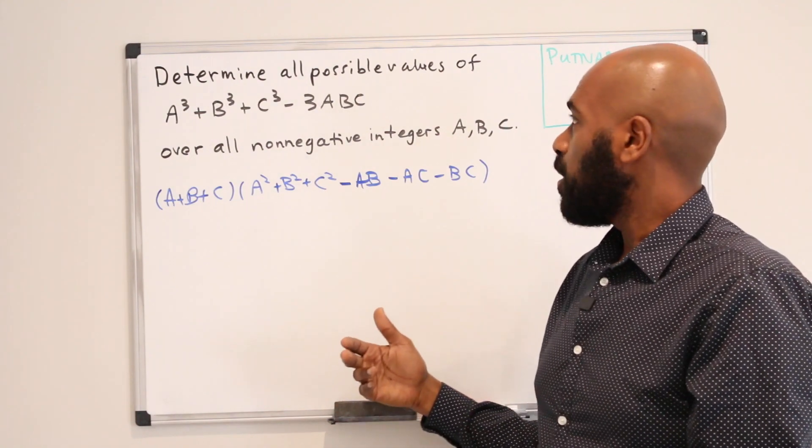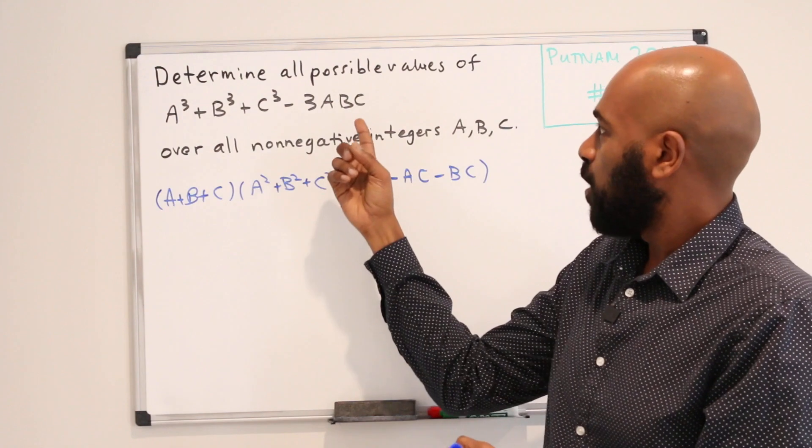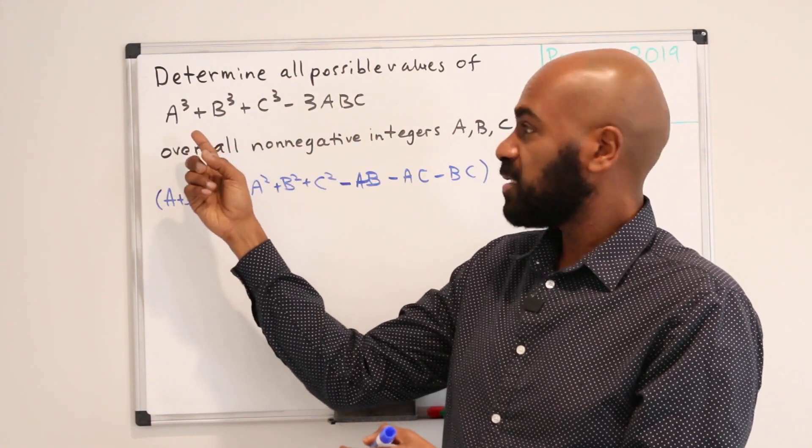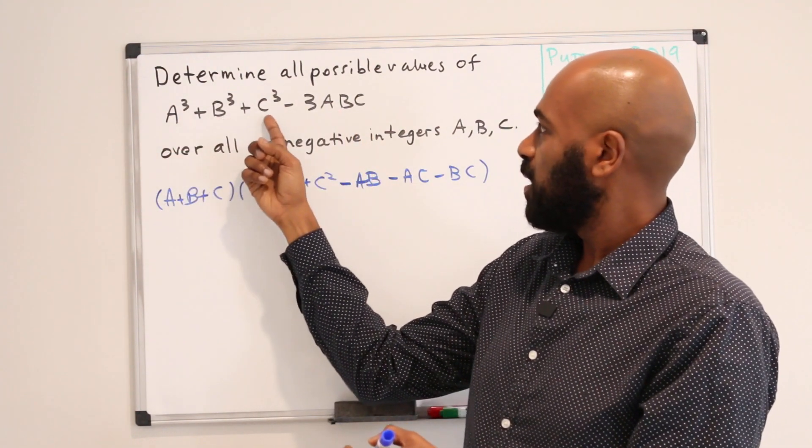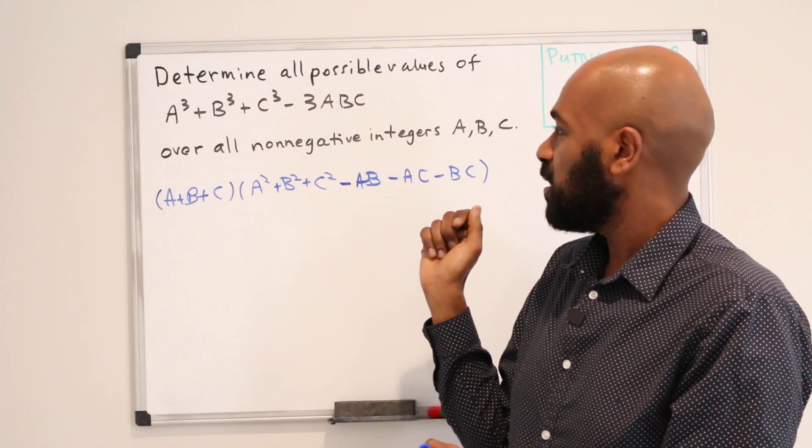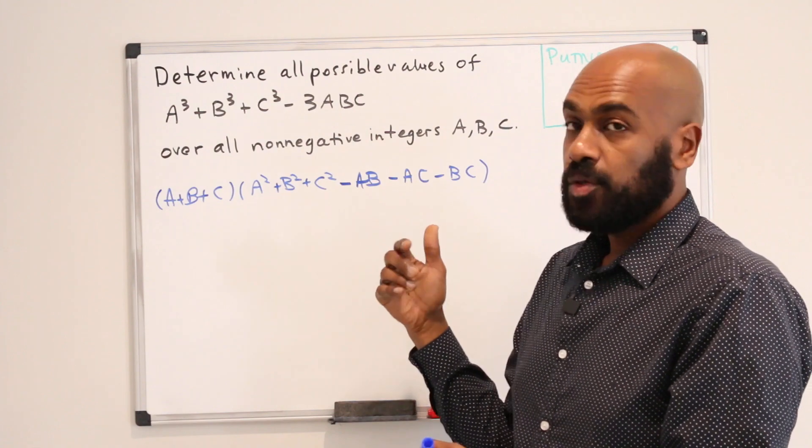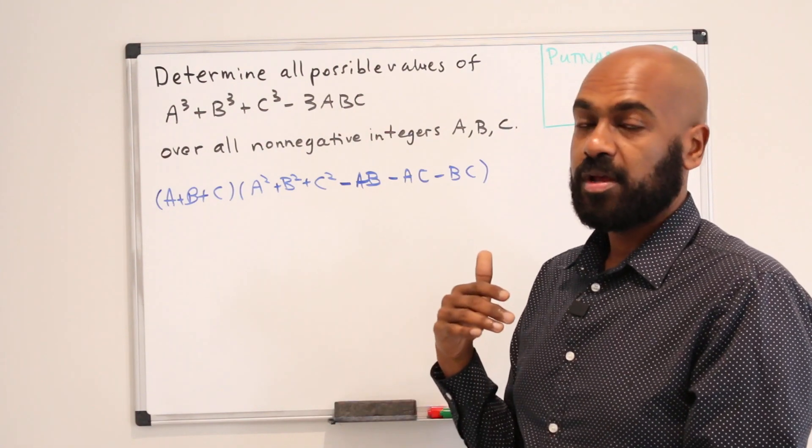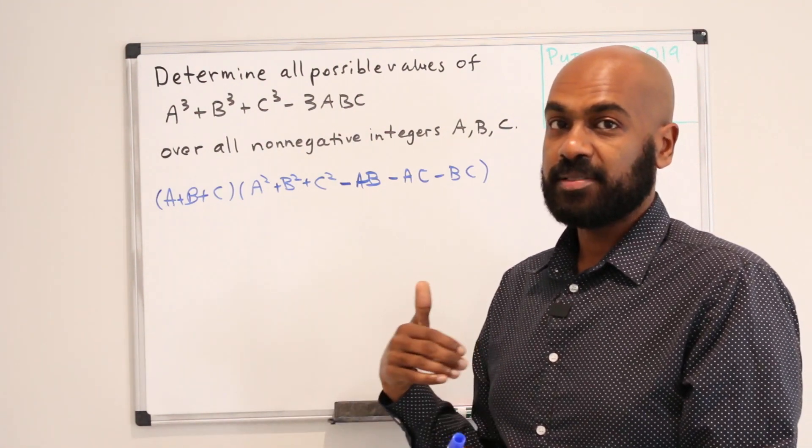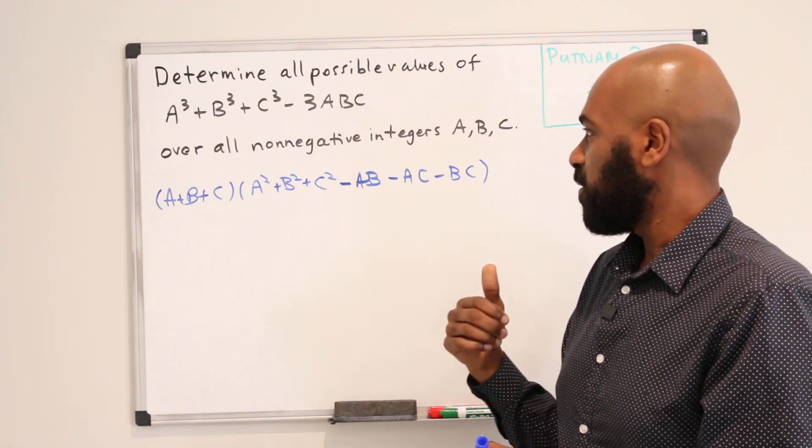I'll talk in another video about how to factor polynomials that look like this in the sense that every single monomial that you see in this expression has the same degree here degree 3. You can do this by reducing the number of variables by one and factoring downstairs but we'll save that for another video.